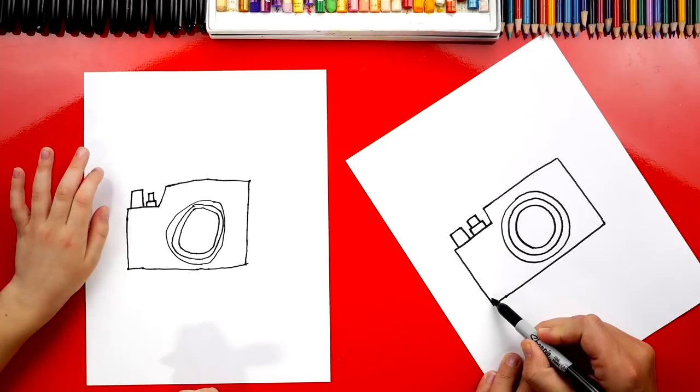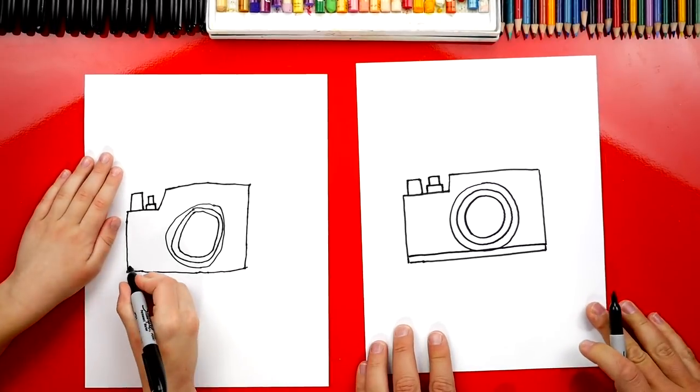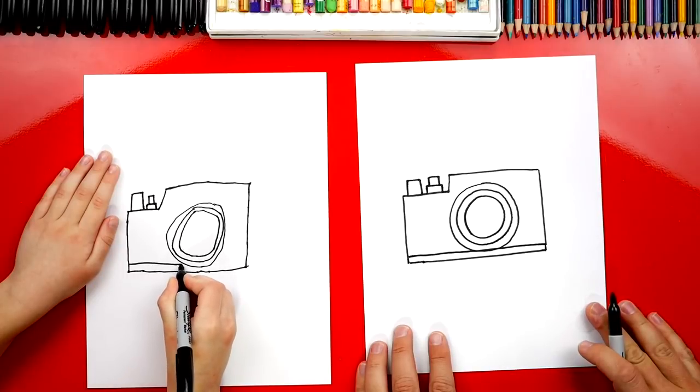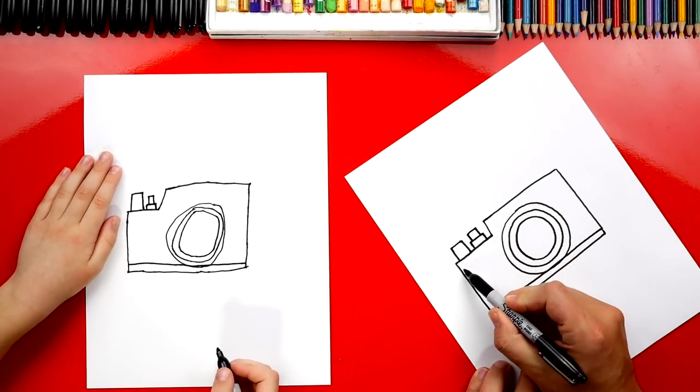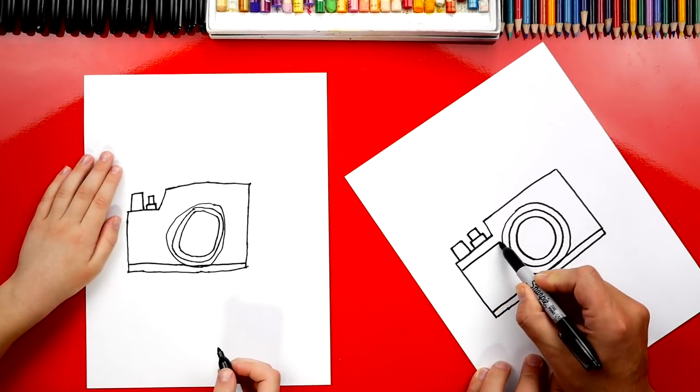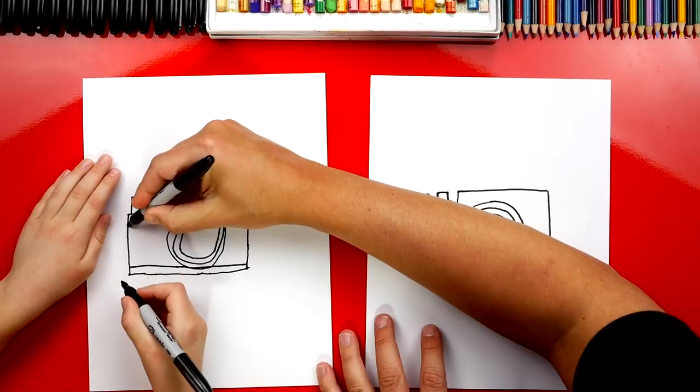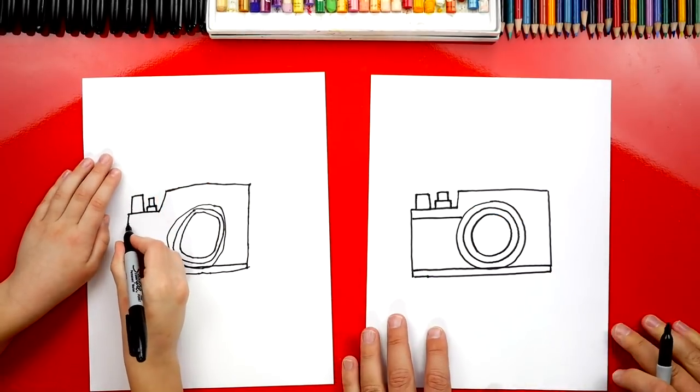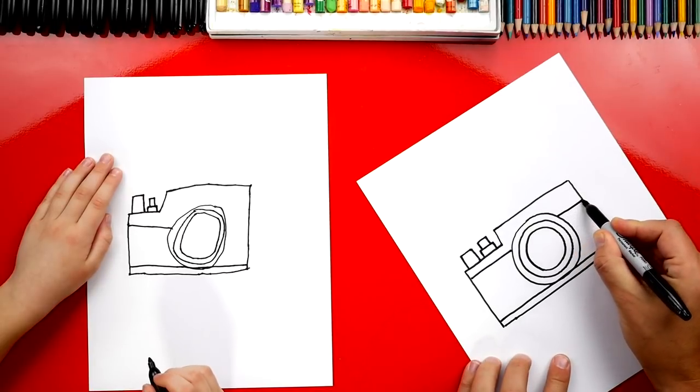Let's add a line that goes across the bottom. There you go, keep going. Then let's also add a line up here. Now we're going to draw this line all the way to the lens. We can start there and go straight across. Then we're going to imagine that going through the lens and coming out the other side.